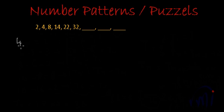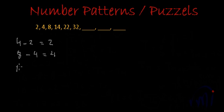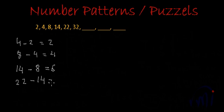So 4 minus 2 gives us 2. The third term 8 minus the second term 4 gives us 4. The fourth term 14 minus the third term 8 gives us 6. Then we have 22 as the fifth term minus the fourth term 14, which gives us 8. And the sixth term 32 minus the fifth term 22 gives us 10.